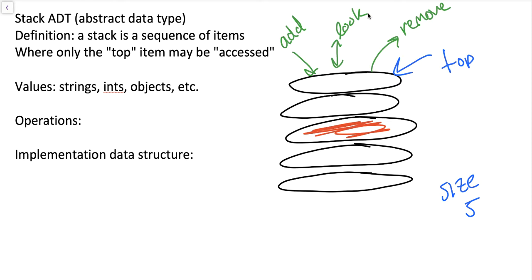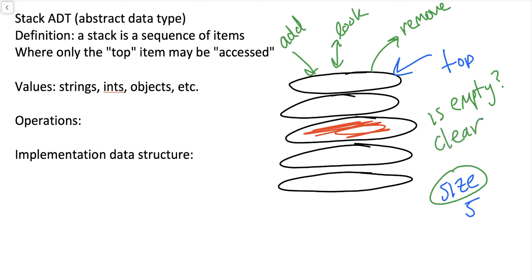We can also figure out what the size is of the stack of plates. We could also look at the top and ask ourselves: is the stack empty? And the last thing an employee might want to do is clear it out — say they ordered new fancier plates and they're done with these. An employee could pick up the entire stack and now the stack is empty, then add the newer plates one at a time. So in summary, these are the six standard stack ADT operations.